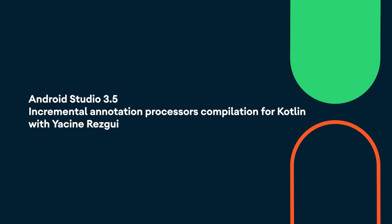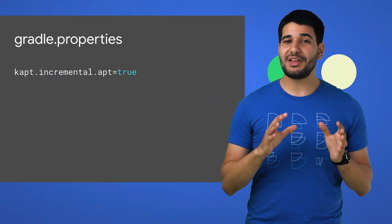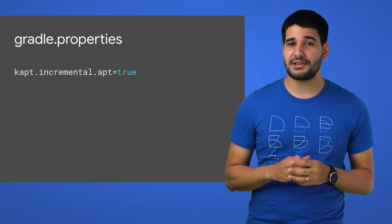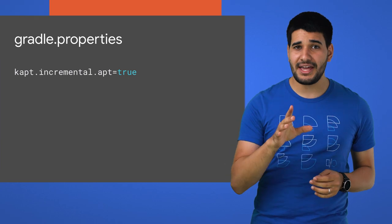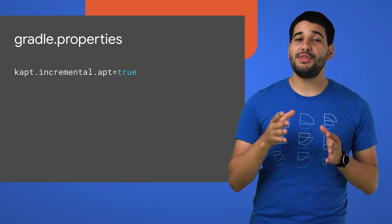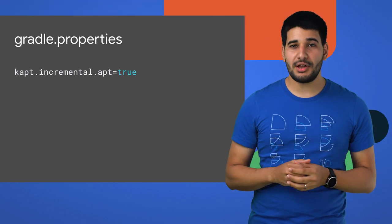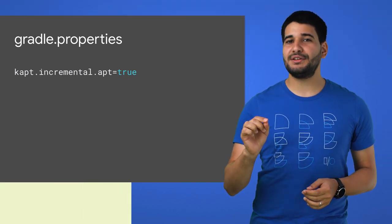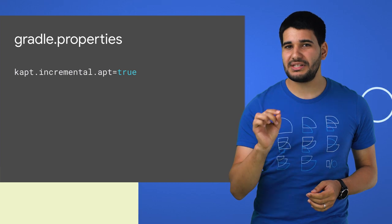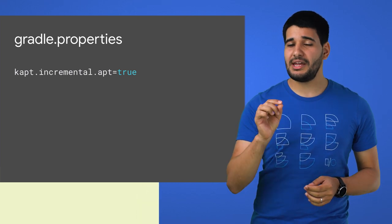Android Studio version 3.5 is now available for download on the stable channel. Incremental annotation processor compilation wasn't available for Kotlin until now. With the newest Kotlin plugin version, you can add this line to your Gradle property file to enable it.